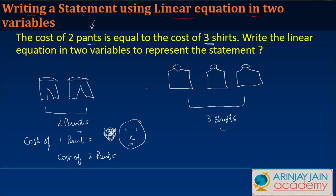Simple. It's two times X or 2X. And this is equal to the cost of three shirts. But again, what's the cost of the shirt? I don't know. So let me assume it as a variable Y.